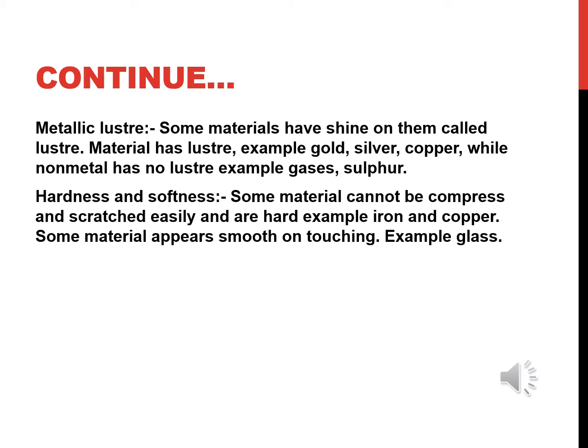Now we move toward our next slide: Metallic Lustre. The shininess of a material is called its lustre. Some materials shine because light gets reflected from their surface. Metals show this property — for example, stainless steel shows lustre, while wood does not. Lustre is a unique property of matter.